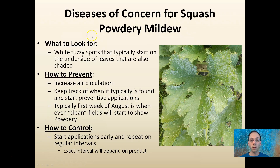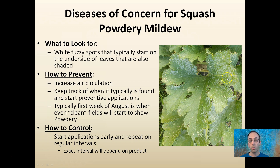First, let's start with powdery mildew, a very obvious one if you're growing squash. These fuzzy white spots typically occur on the underside of leaves and in shadier areas. The key part when you're trying to control this is to try to increase air circulation and also apply products at regular intervals.